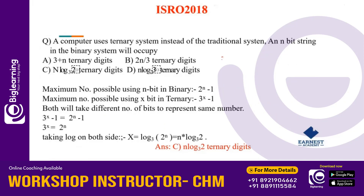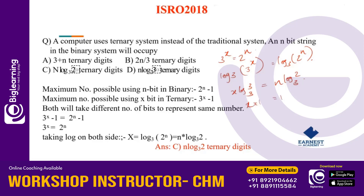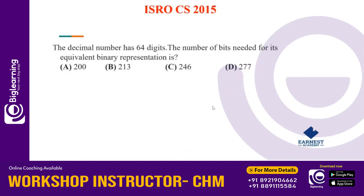3 raised to x is equal to 2 raised to n. Now we take the log of both sides: log of 3 raised to x equals log of 2 raised to n, giving x log 3 to the base 2. So the answer is n log 2 to the base 3 — wait, that is the question. The answer is n log 3 to the base 2.